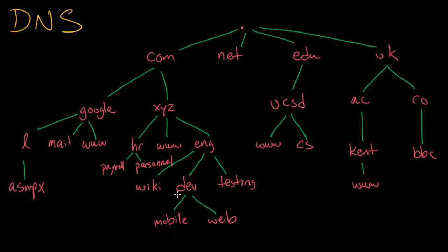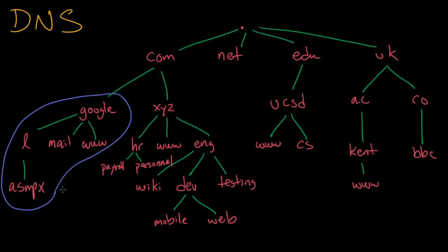For example, I don't know if this is true, but Google might have set things up so that the google.com zone knows about everything underneath it, including this L subdomain and the nodes below that.